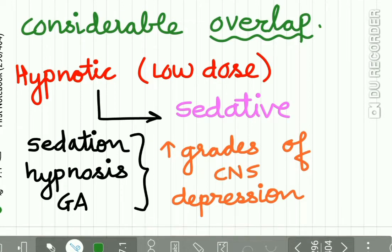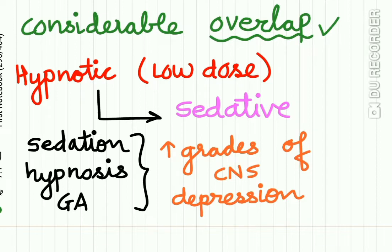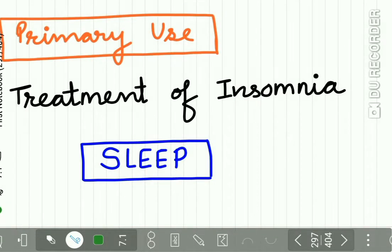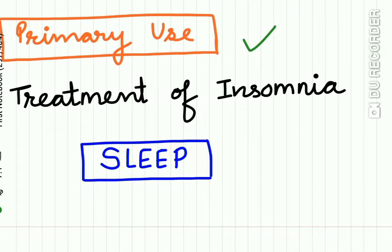There is a considerable overlap between sedatives and hypnotics. A hypnotic at a low dose can act as a sedative. Sedation, hypnosis, and general anesthesia are increasing grades of CNS depression. The primary use of sedatives and hypnotics is the treatment of lack of sleep, or insomnia. Let us now study sleep in detail.